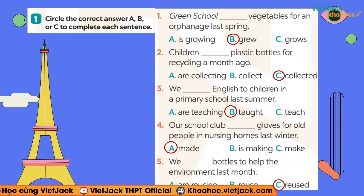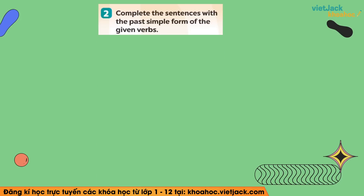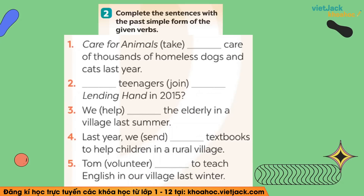Bài tập số 1 rất là đơn giản, để cho các bạn làm quen với các dấu hiệu nhận biết và cho các bạn một số những cái từ trong thì quá khứ đơn — nó là có quy tắc hay là bất quy tắc. Tiếp theo, chúng ta sẽ tiếp tục với bài Complete the sentences with the past simple form of the given verbs — bài tập chia động từ. Ở bài tập này, các bạn nhớ vẫn sẽ tìm cho cô những Time Expressions of the Past Simple trước, sau đó mới vào làm chia động từ.